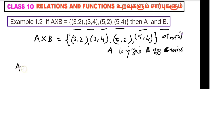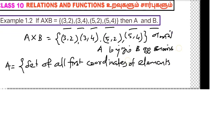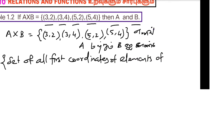A equals the set of all first coordinates of elements of A cross B. The first coordinates of A cross B are 3 and 5. Therefore, A equals {3, 5}.